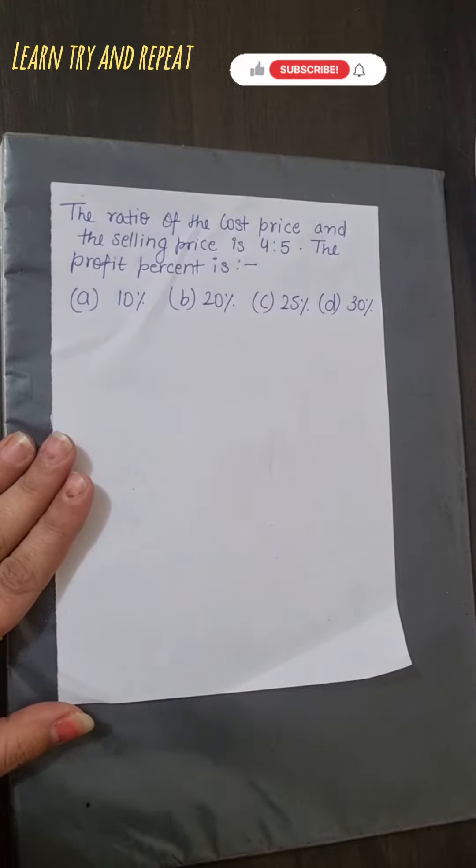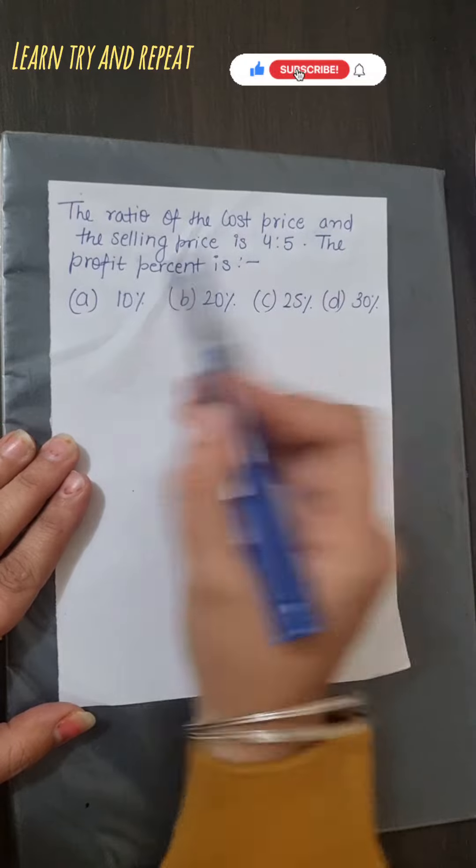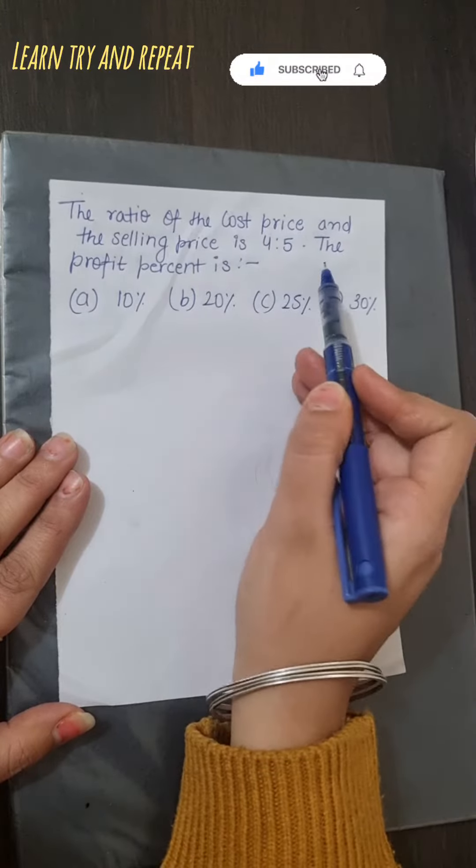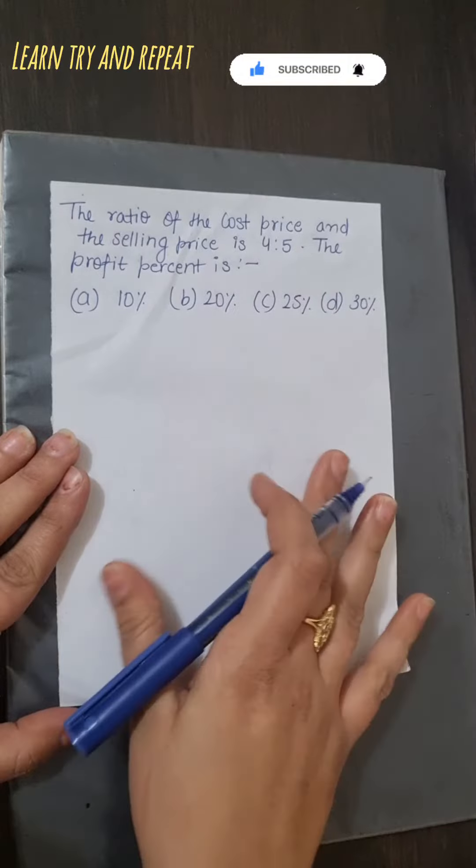Hello friends, welcome to my channel Learn Try and Repeat. So this question is: the ratio of the cost price and the selling price is 4:5. The profit percentage is? We have options, so we have to select one option.